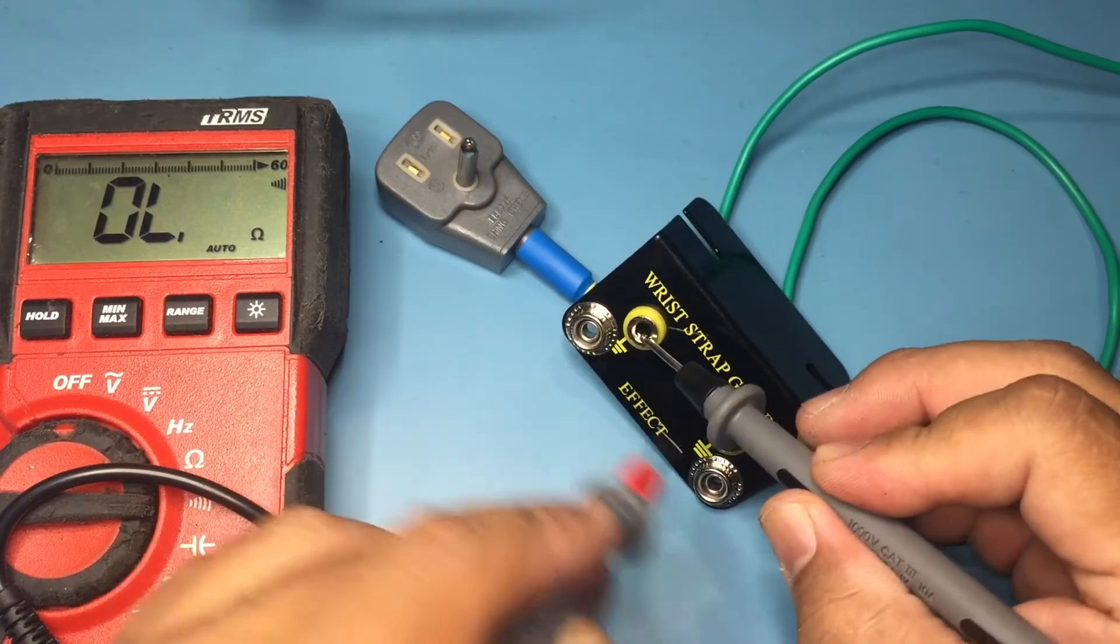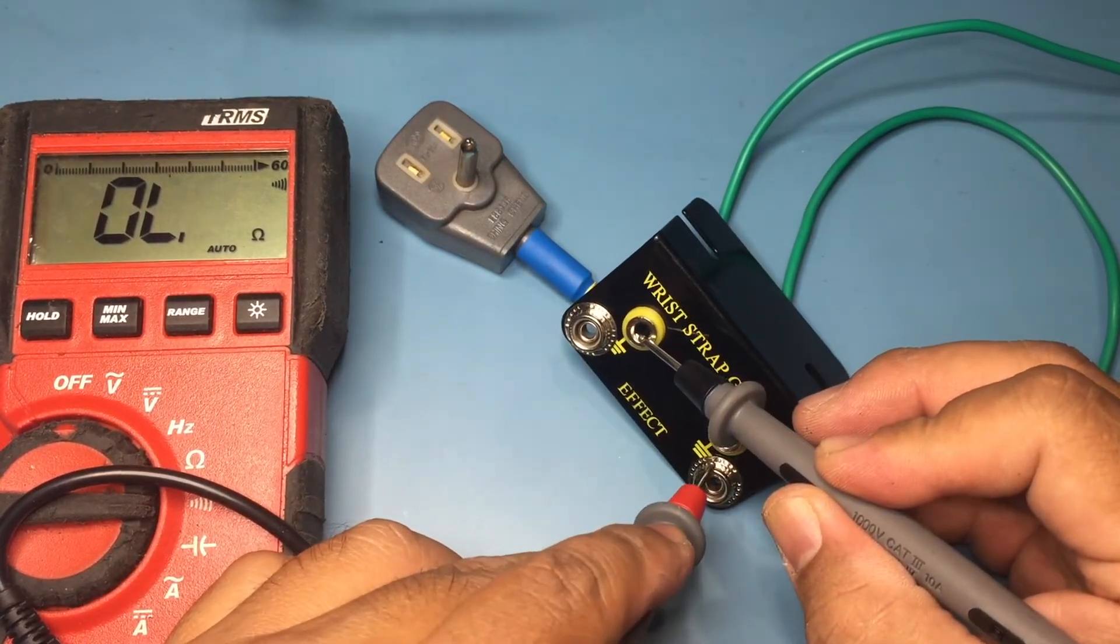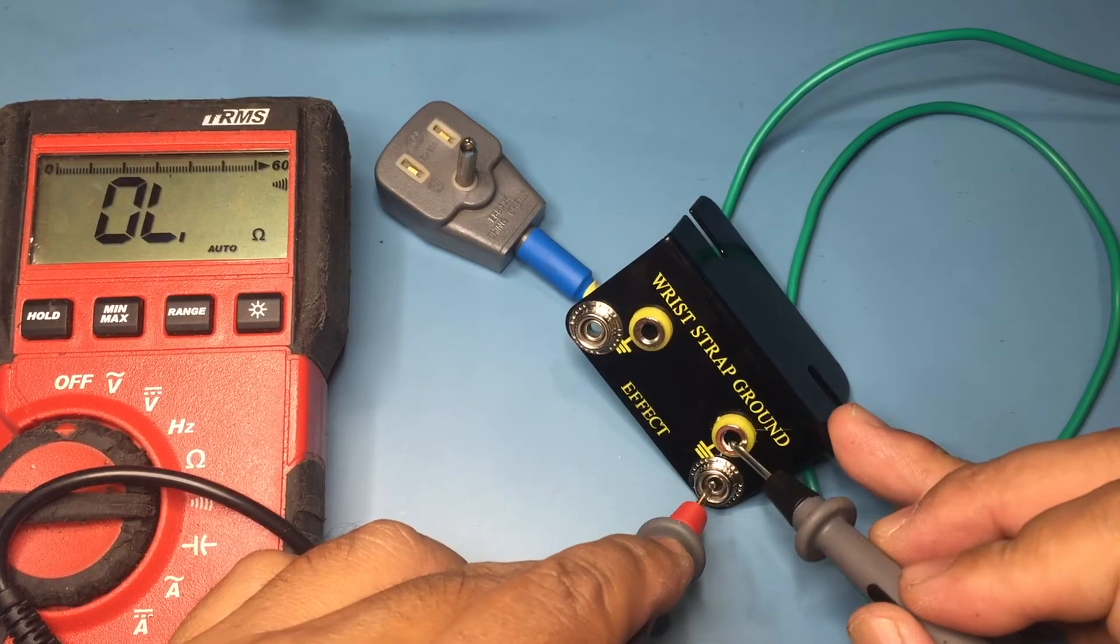Interesting note here is that the snaps probably have paint underneath them, so they're not connected to the banana jacks.